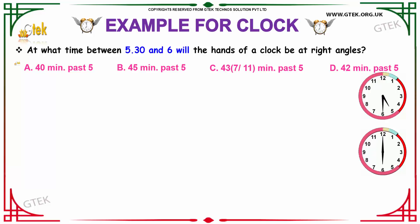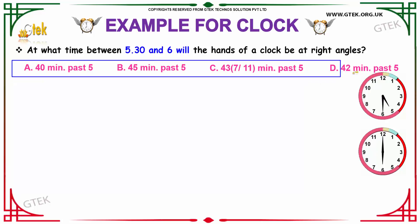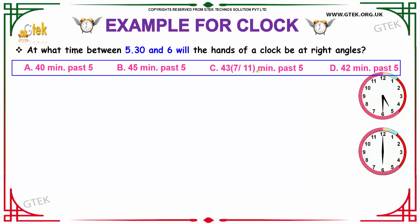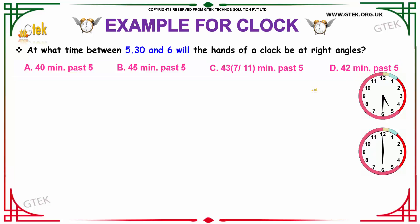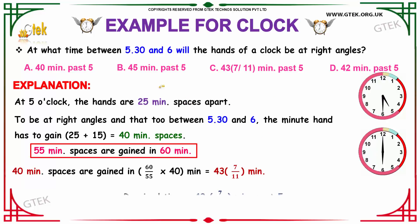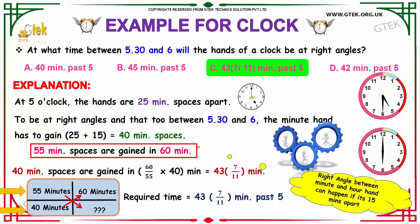The options are: A) 40 minutes past 5, B) 45 minutes past 5, C) 43 and 7/11 minutes past 5. At 5 o'clock, the hands will be 25 minutes spaces apart. We need to find at what time between 5:30 and 6 the hands will be at right angles. The hour hand and the minute hand are 25 minutes spaces apart, and to be at a right angle the clock hands must be 15 minutes spaces apart.